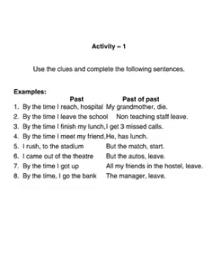So you see, past perfect: whenever you get a sentence which is past of some other sentence, that sentence should be in past perfect. Suppose you have Action A and Action B. Action A happened after Action B — that is, Action B happened before Action A. Action B has to be said in past perfect; Action A has to be said in simple past. It's as simple as that. It would be a nice idea if you could write 10 sentences of your own in past perfect and simple past combinations. I hope you enjoyed the program. Thank you.